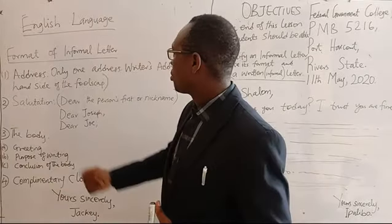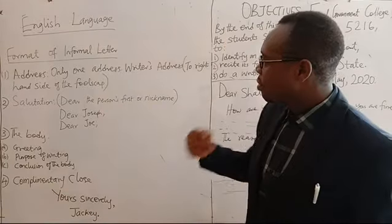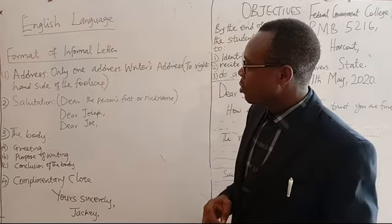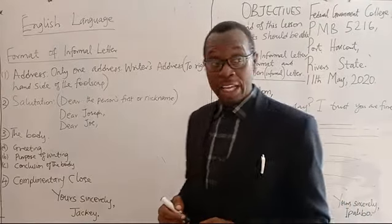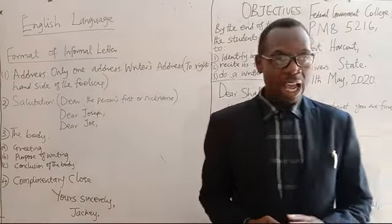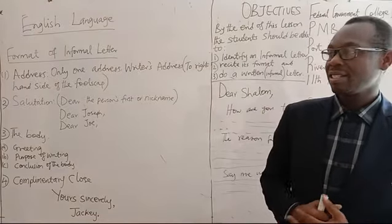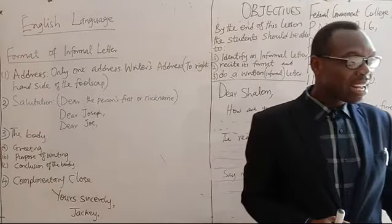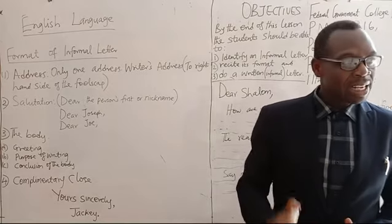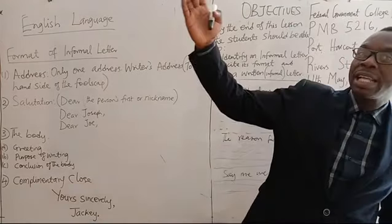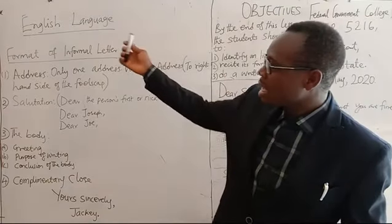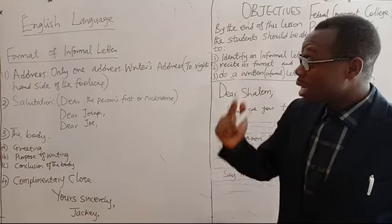If you look at the board here, we have the format of the informal letter written clearly. Number one: the first thing you do when you're writing an informal letter is to write the address. The address is one of the most important things. For an informal letter, you have only one address, and that address is the address of the writer — your address — written at the top right-hand side of your foolscap. Only one address.